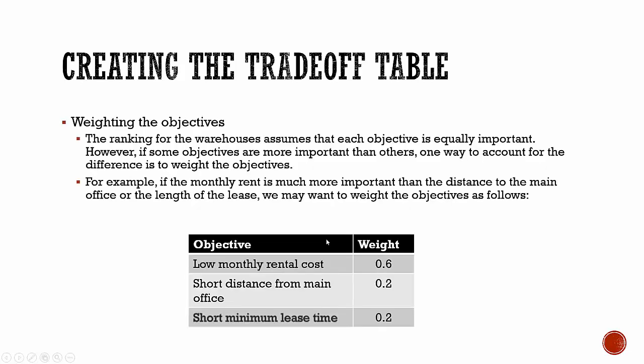However, we may consider some objectives more important than others. In order to document this and have it impact our outcome, we'd want to provide weights for each objective. The ranking for the warehouses assumes each objective is equally important, but some objectives are more important than others. One way to account for the difference is to weight the objectives. For example, if the monthly rent is much more important than the distance to the main office or the length of the lease, we may want to weight the objectives accordingly.